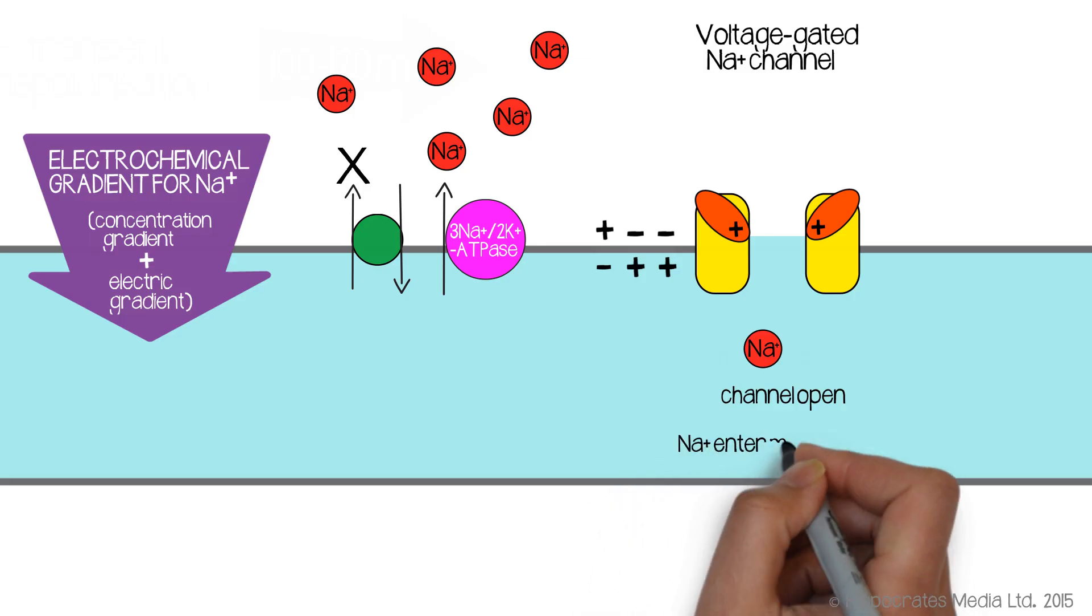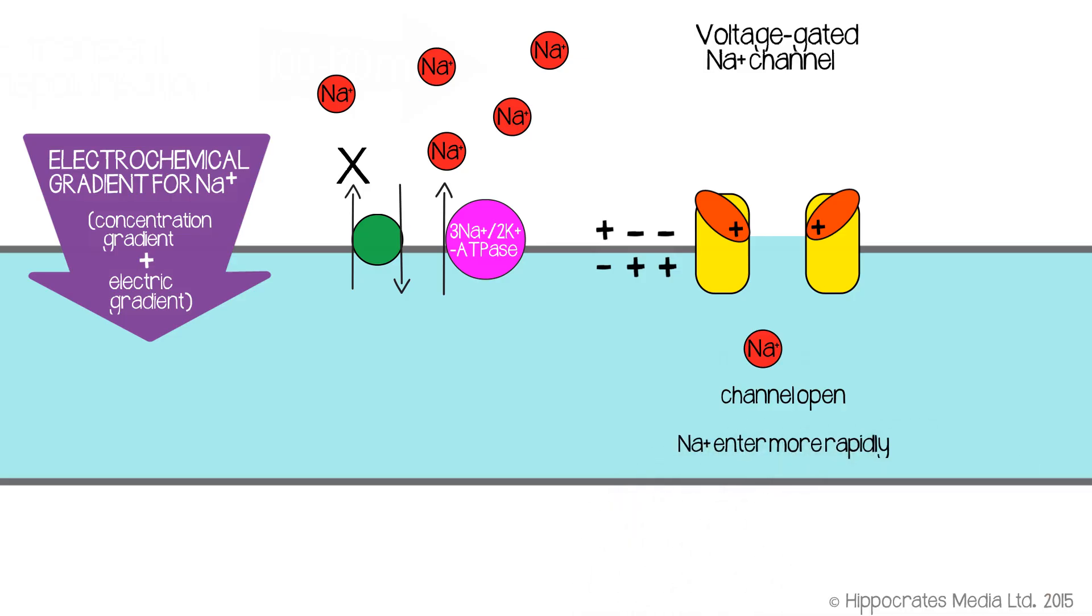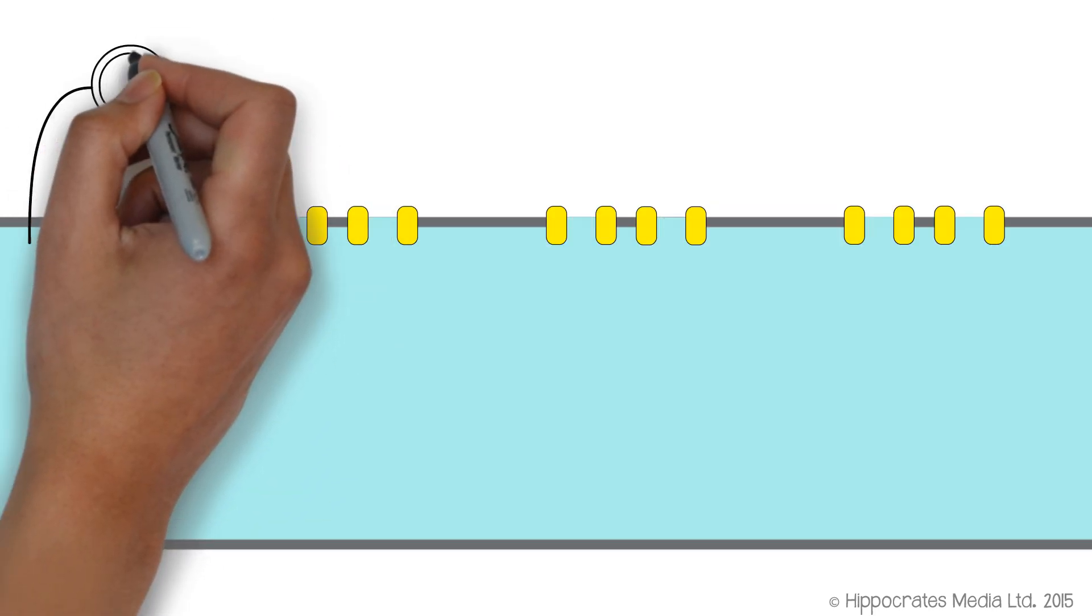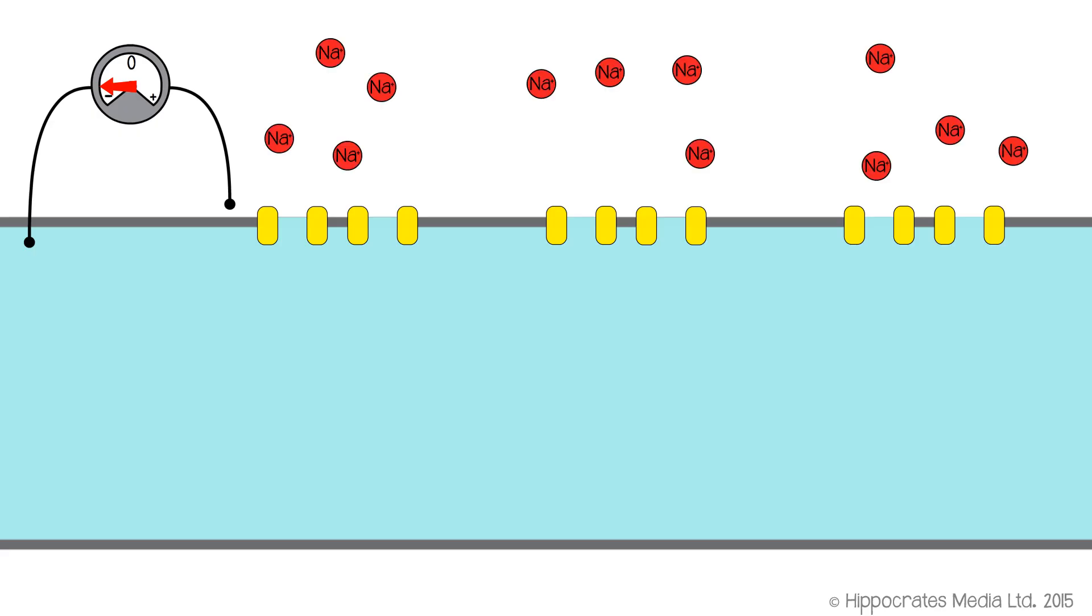And they enter the axon more rapidly than the sodium pump can cope. So you've got excess positive ions entering the cell. The interior of the cell will then become a little bit more positive.